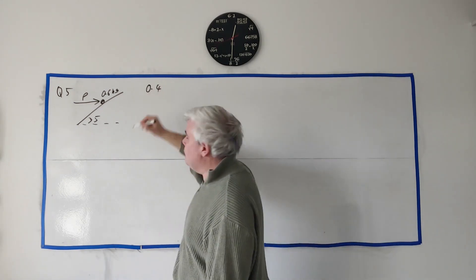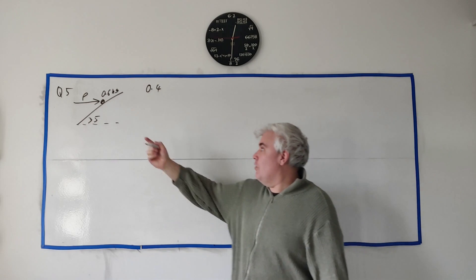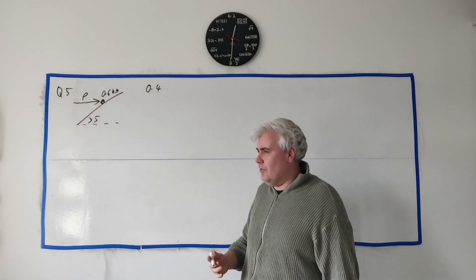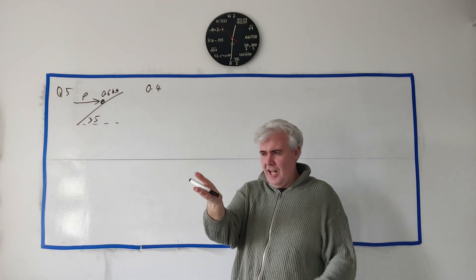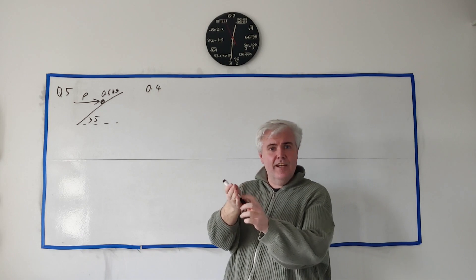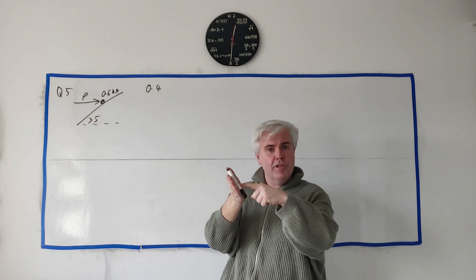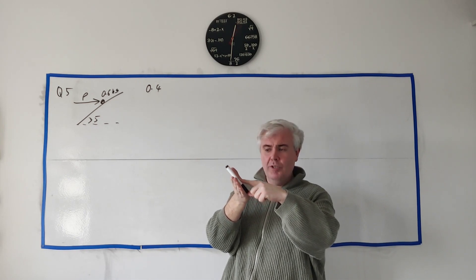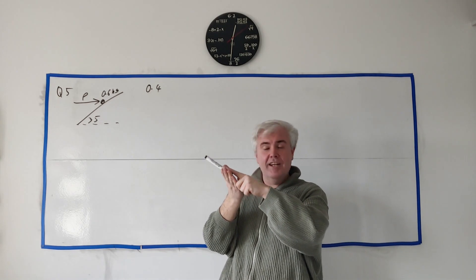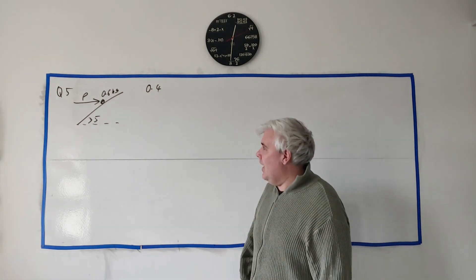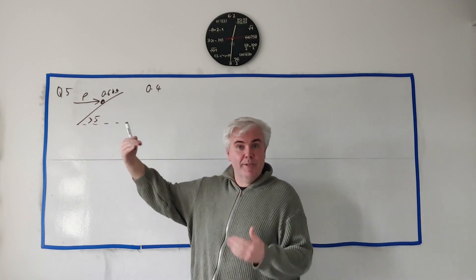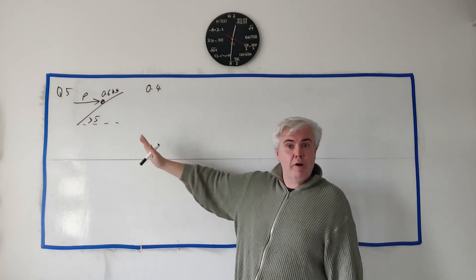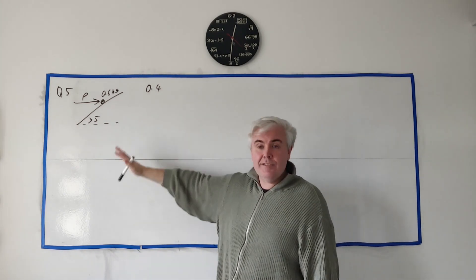They tell us the coefficient of friction is 0.4, and ask what's the least possible value of P. There's no trick there for least possible value. If something's sliding, I can hold it in place with some force. More force also holds it in place, and enough force will get it to slide up the hill. There are multiple answers that will hold this in place because friction will switch directions.